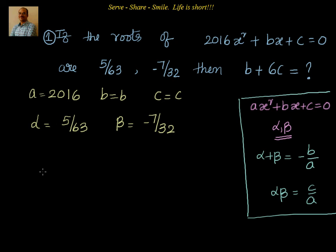So let's go for the first relationship. We have α + β = -b/a. What is α value? 5/63 plus β, that is -7/32, is equal to -b/a. What's a value? 2016. I see that 63 × 32 is 2016, so I can write it down.